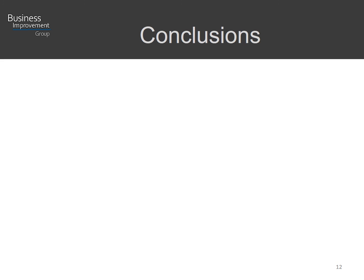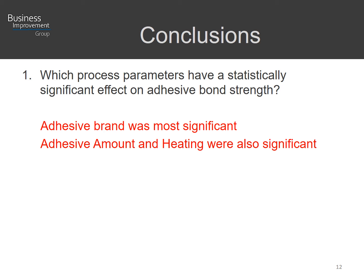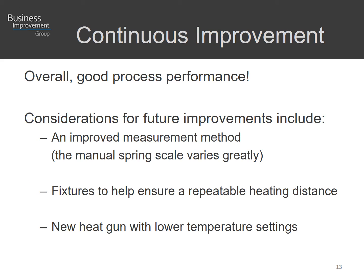Conclusions of this study: which process parameters had a statistically significant effect on adhesive bond strength? The adhesive brand was most significant. The adhesive amount and heating were also significant, and we were able to optimize those to get the strongest bond. The process capability with optimal bonding process settings demonstrated a PPK of 1.56. If the acceptance criteria for this application is 1.33, this would pass; if it were 1.66, it would not.